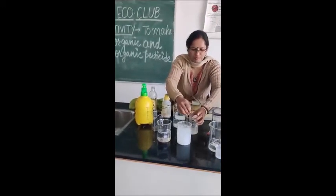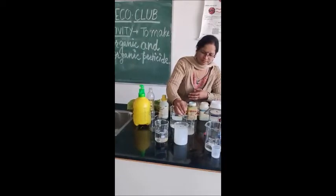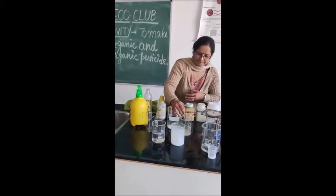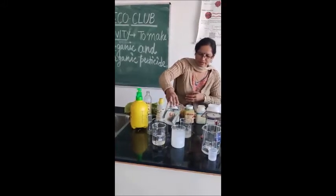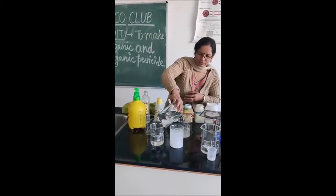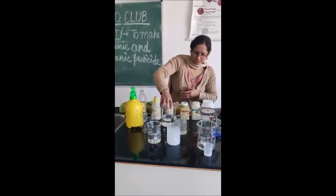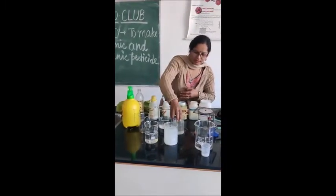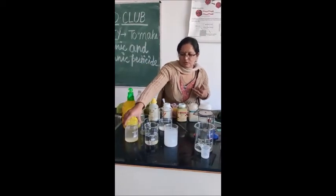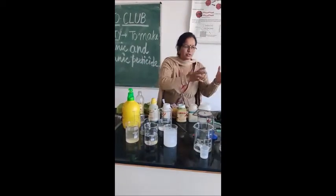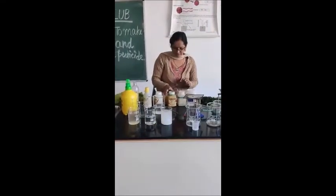We will dilute this solution again up to 500 ml or 1000 ml. As it is dissolved, we are adding more water into it. This is our third pesticide — the common salt solution. It can also be used for sprinkling on some plants.